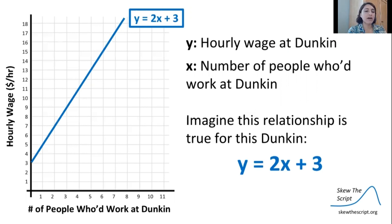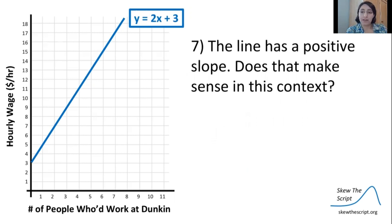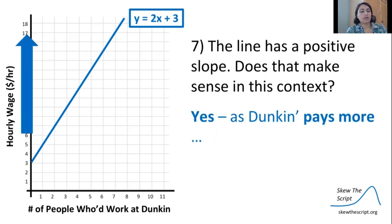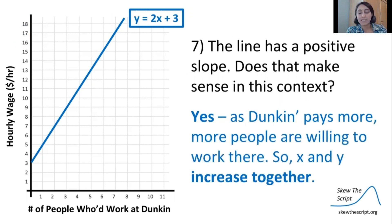Let's imagine this relationship here: y equals 2x plus 3. So the hourly wage equals 2 times the number of people who would work at Dunkin' Donuts plus 3. We can go ahead and plot this line, and this line is going to have a positive slope. That makes sense because when there is a higher wage being offered, more people are going to want to work at the business. As the business pays more, more people work there — so x and y are increasing together. That's the definition of a positive slope.